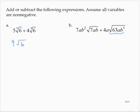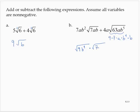The square root of 63ab to the fifth — I can think of that as: 63 is 9 times 7, times a. I'm looking for perfect square factors. b to the fifth is b to the fourth times b. So doing a little bit of side work here, that's the square root of 9b to the fourth times the square root of 7ab.